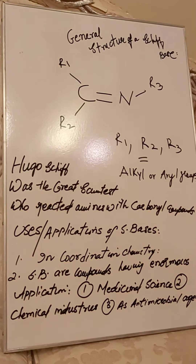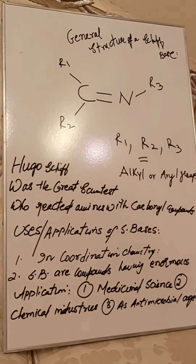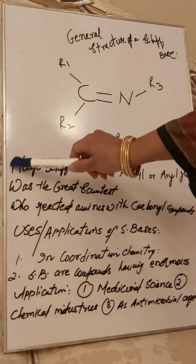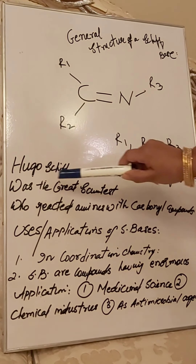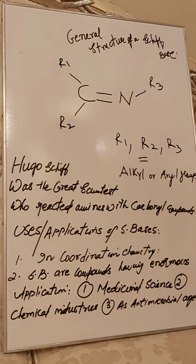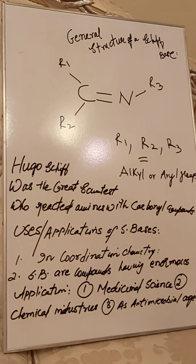Who was the great scientist who got the idea of replacing a carbonyl group C=O with an amine group C=N? His name was Hugo Schiff — H-U-G-O — Hugo Schiff. He was the great scientist who reacted amines with carbonyl compounds and made this enormous and dynamic compound that we now call the Schiff base, which has enormous applications.